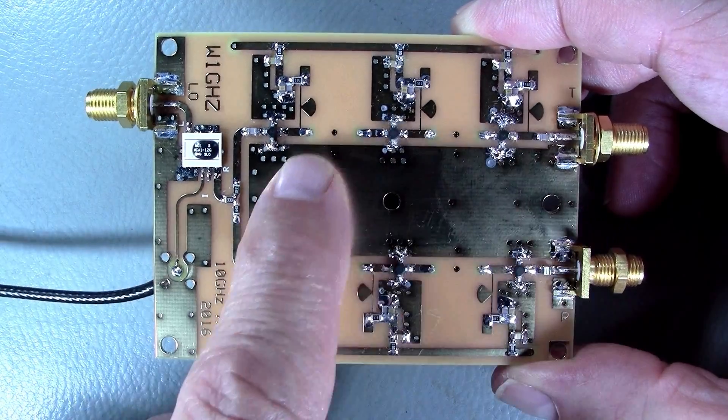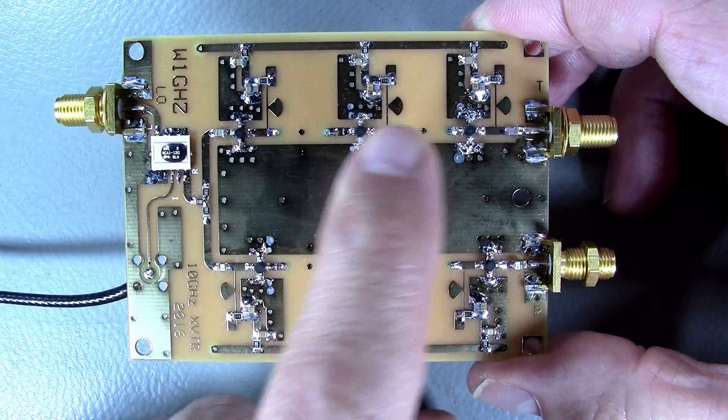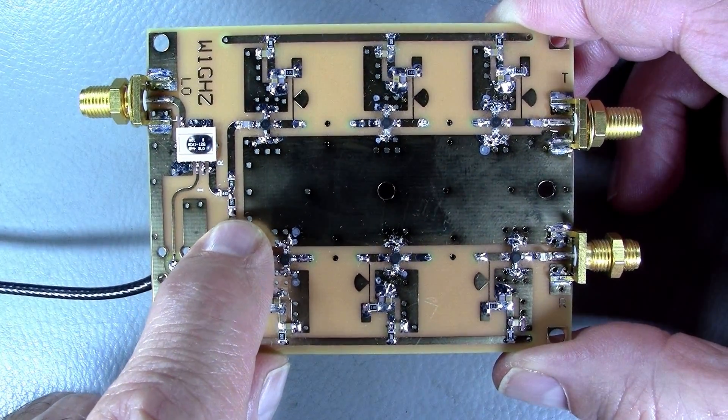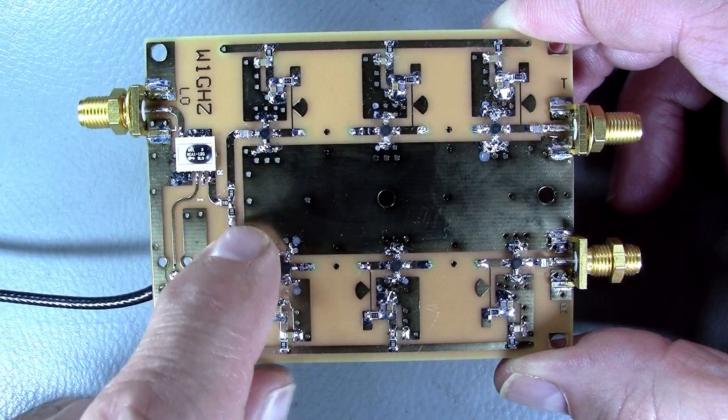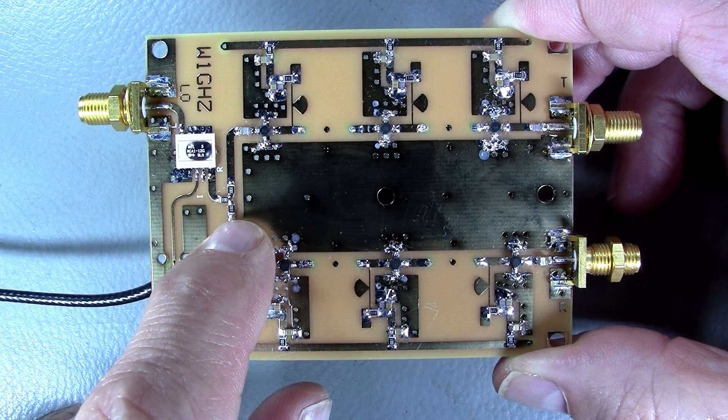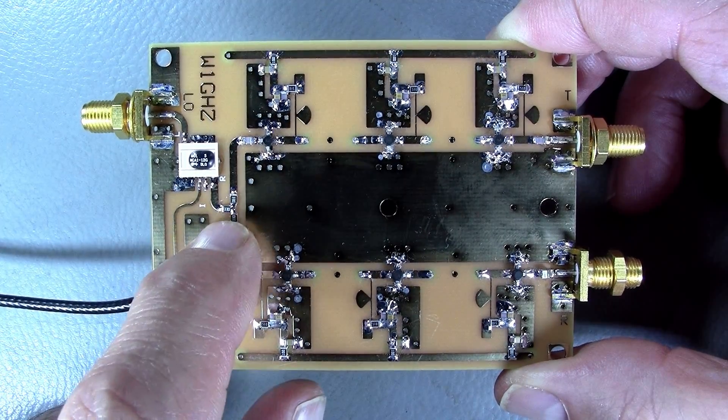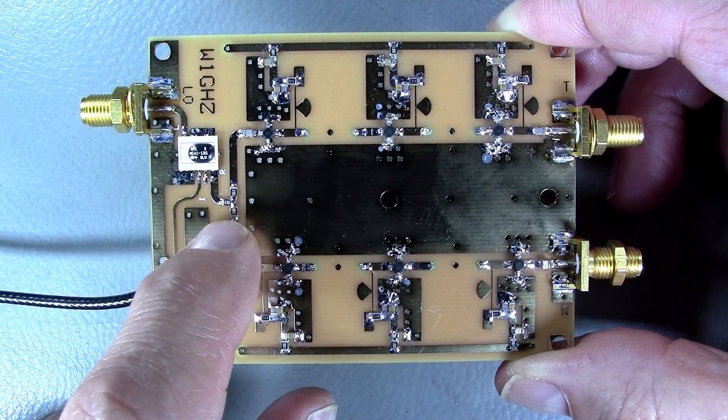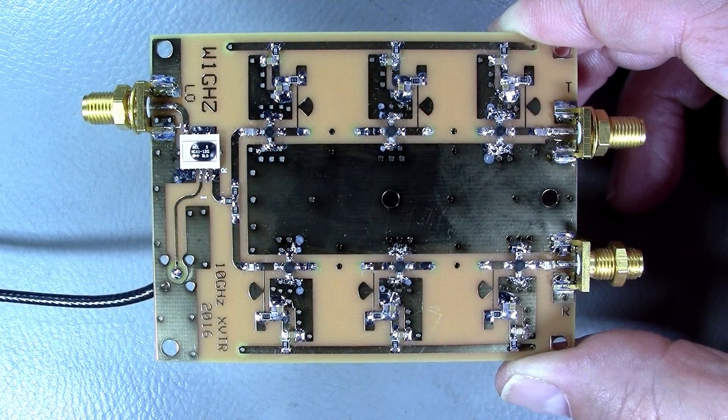On the transmit path I used regular NPO 5 picofarad 0805 capacitors. W1GHZ recommended using 0603 resistors for the resistive splitter between transmit and receive paths, but I didn't have those. He mentioned 0805 will likely work as well, so I used 0805 resistors. I'm pretty sure it's going to work fine.